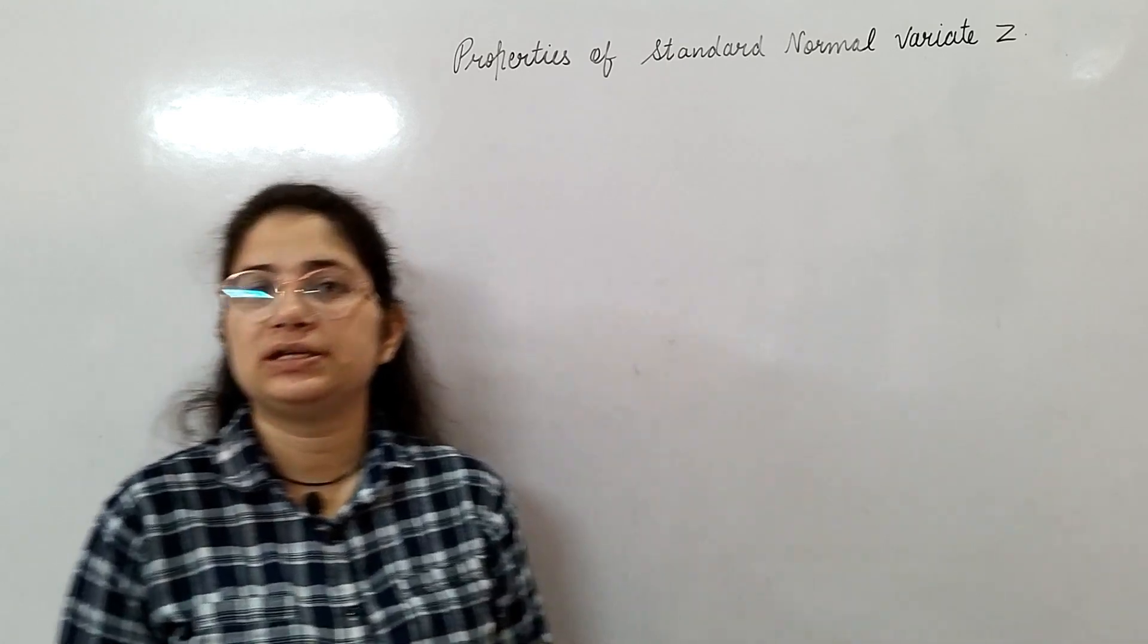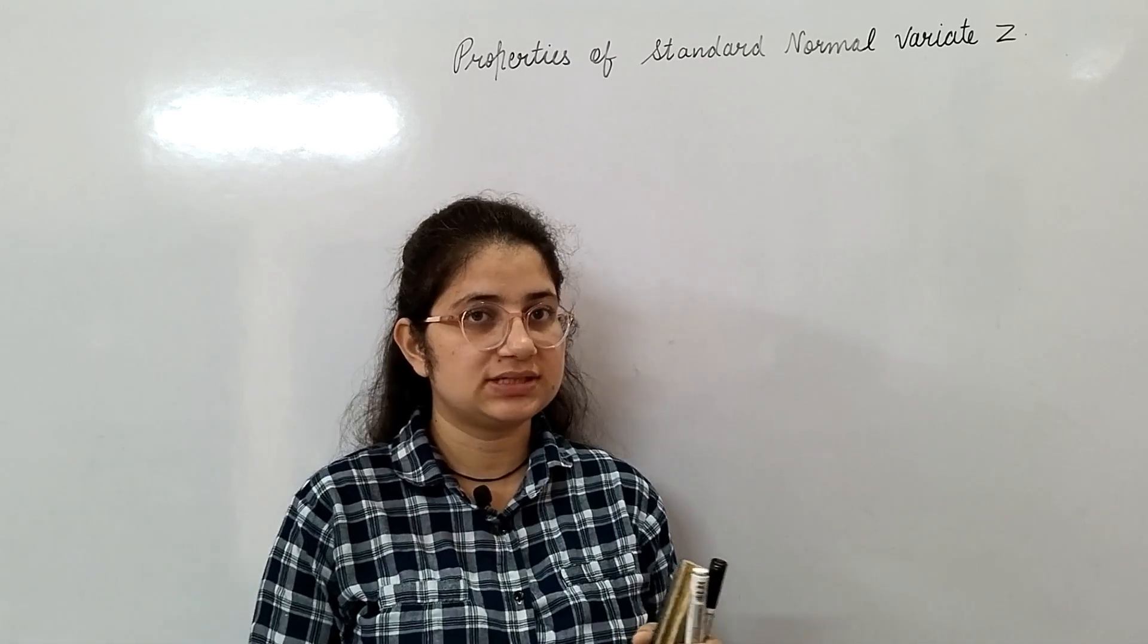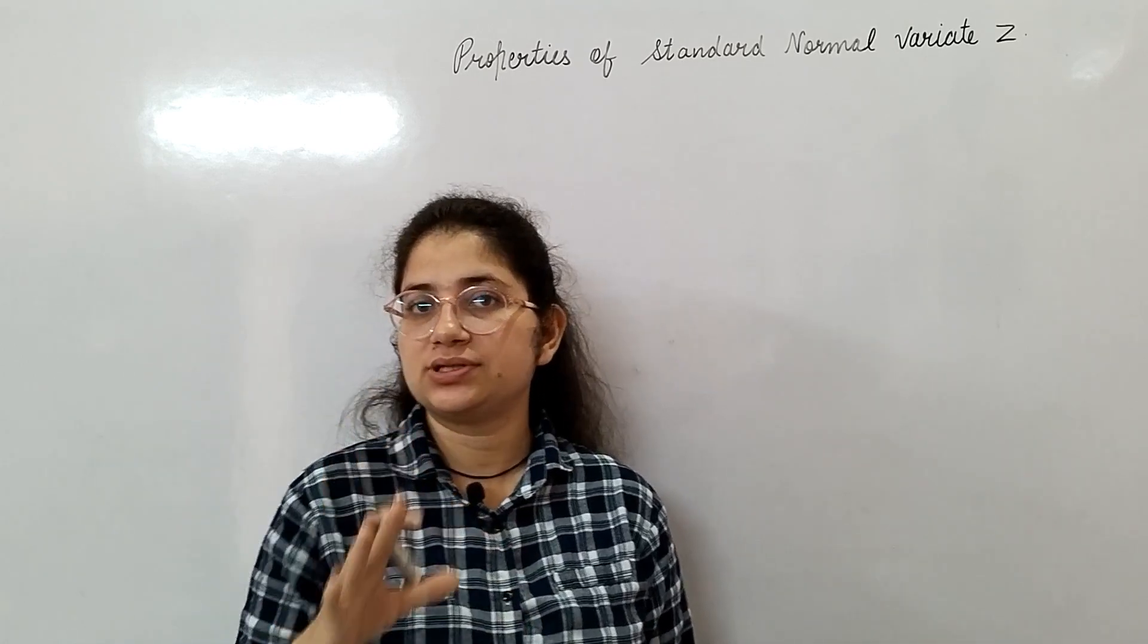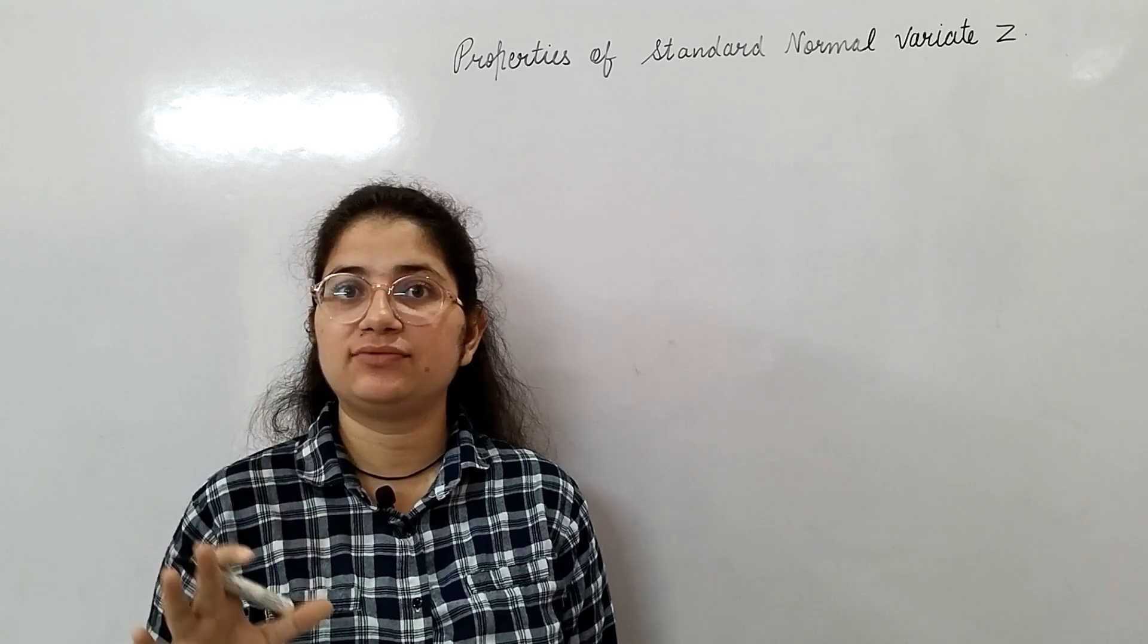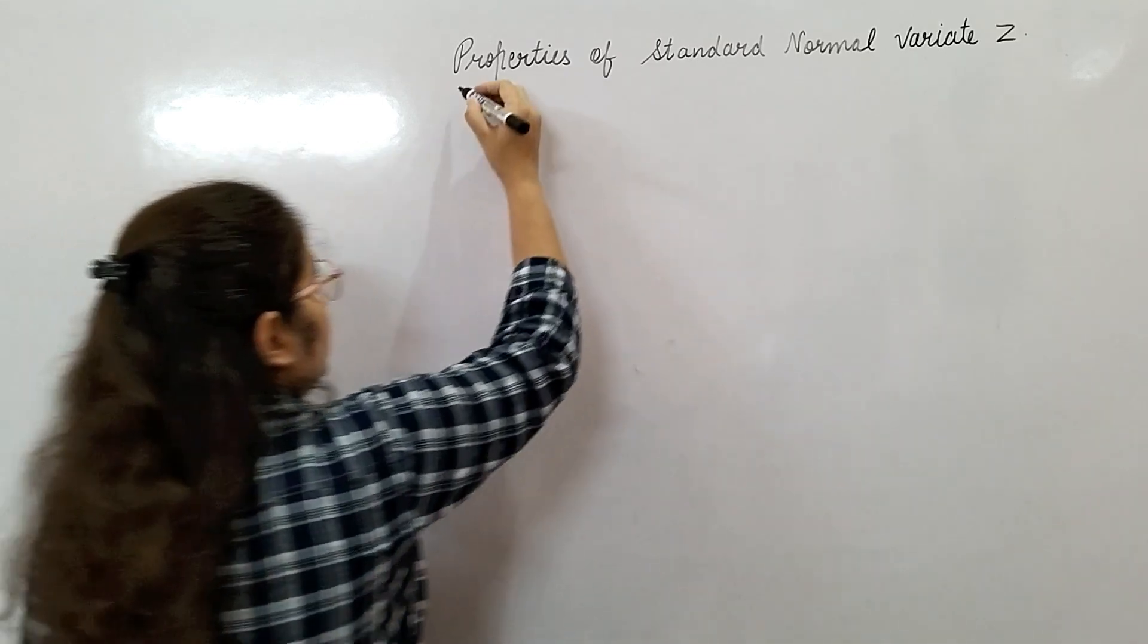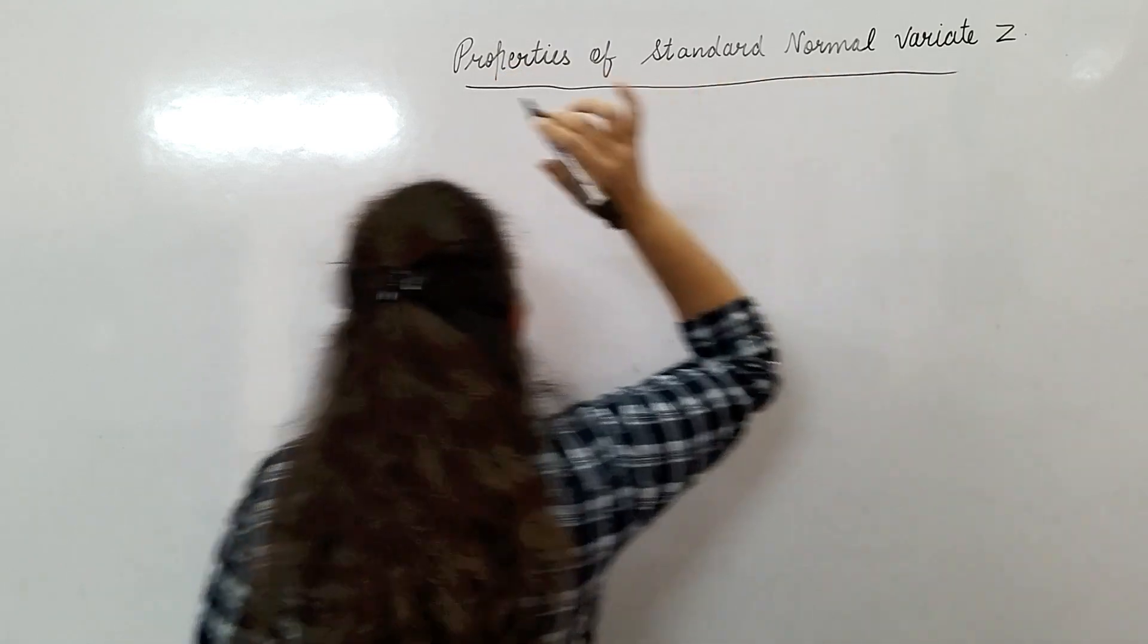Firstly, I will tell you the mean and variance of the standard normal variate and we will calculate the CDF function. PDF function is given in definition but we have to find out the CDF function also. The properties, what is the first property?